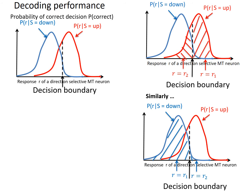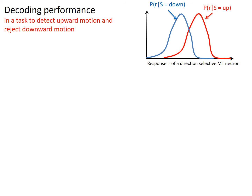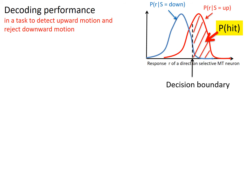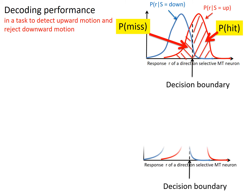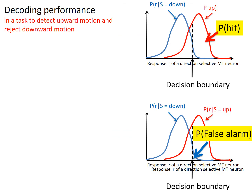If we are doing a task to detect upward motion and upward and downward motions are equally likely, the probability of correct decoding outcome is the average of these two areas, and the probability of incorrect decoding outcome is the average of the other two areas. If we are doing a task to detect upward motion and reject downward motion, then this area is the probability of hit — detecting correctly — and this area is the probability of miss — not detecting upward motion. This area is the probability to correctly reject a downward motion, while this tiny area is the probability of false alarm: falsely declaring a downward motion as upward motion.